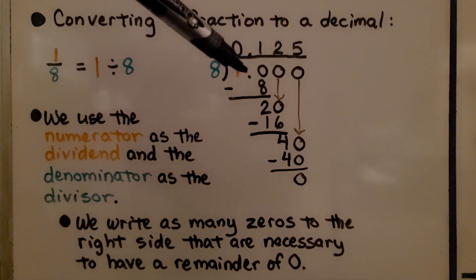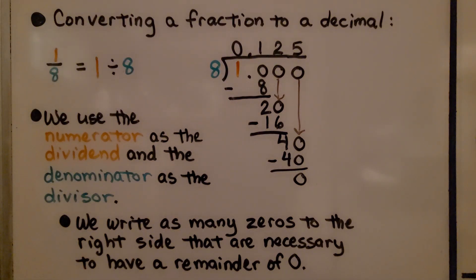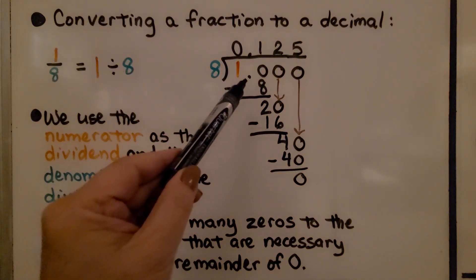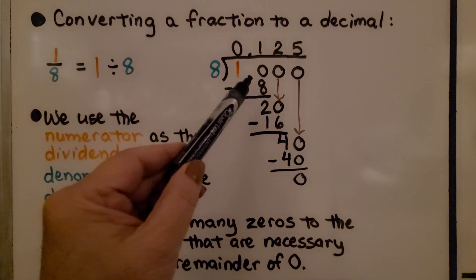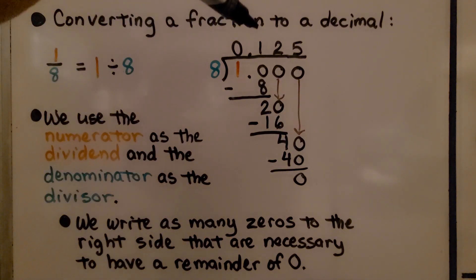We write as many zeros to the right side that are necessary to have a remainder of 0. We've got a decimal point after the 1, and I needed to add three zeros. We get 125 thousandths for 1/8.